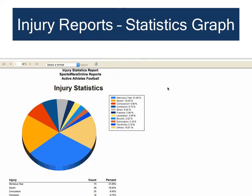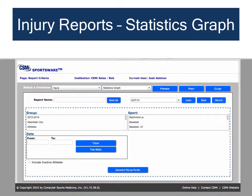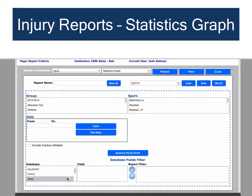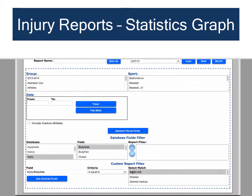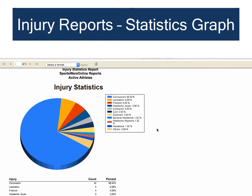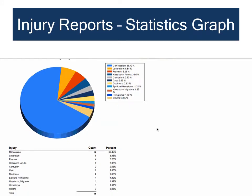You can add additional filters using the Advanced Fields filter at the bottom of the screen. For example, to run a graph of all athletes diagnosed with any sort of head injury, navigate to the filters at the bottom, choose the Injury database, under Field choose Body Area, and in the custom report filter area set the criteria equal to 'Head'. Click Add Custom Filter, then click Preview. The graph now shows the top ten head injuries entered in the database across all sports, with counts and percentages listed below.